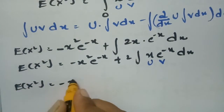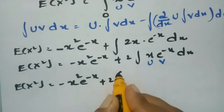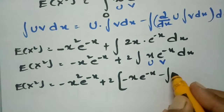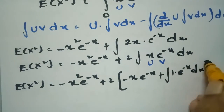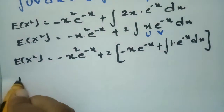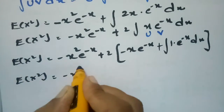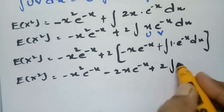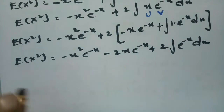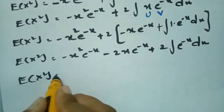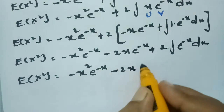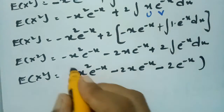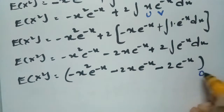Applying integration by parts again: E(X²) = minus x²·e^(-x) plus 2 times [x·(-e^(-x)) minus integral of 1·(-e^(-x)) dx]. This simplifies to minus x²·e^(-x) minus 2x·e^(-x) plus 2·(minus e^(-x)), evaluated between the limits 0 to infinity.